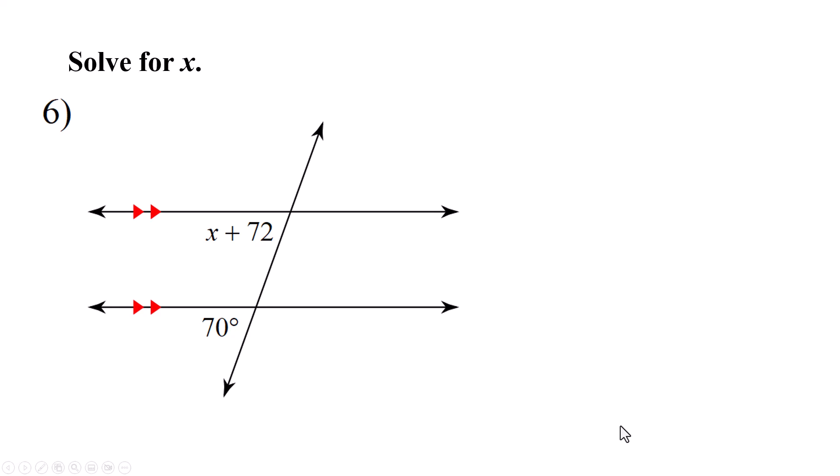All right, you had to solve for x. Figure out what kind of angles these are, how they're related to each other. Set up an equation and solve. These guys are corresponding. Remember how corresponding angles are related. They are equal. So, we're going to take that and set x plus 72 equal to 70. Sorry, this isn't even that hard. I subtracted 72 from both sides, and I got x equal to negative 2.